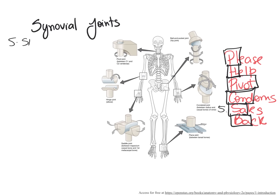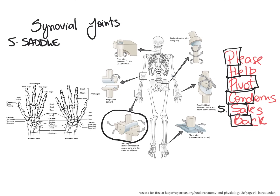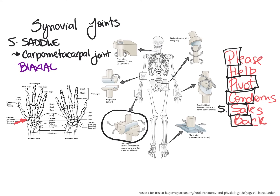The saddle joint has the ends of the bones resembling horse-riding saddles. We find the saddle synovial joint between the trapezium carpal bone and metacarpal 1 — the thumb — forming the carpometacarpal joint. This arrangement allows the thumb to touch all other fingertips. The movement in the saddle joint is the same as the condyloid joint: flexion, extension, abduction, and adduction — making it a biaxial joint.